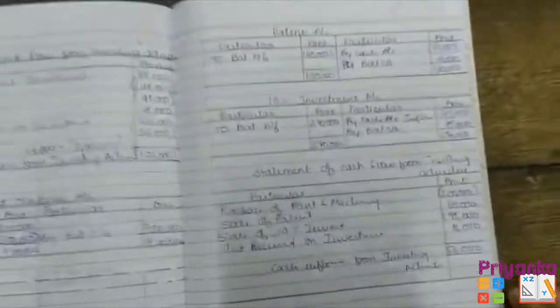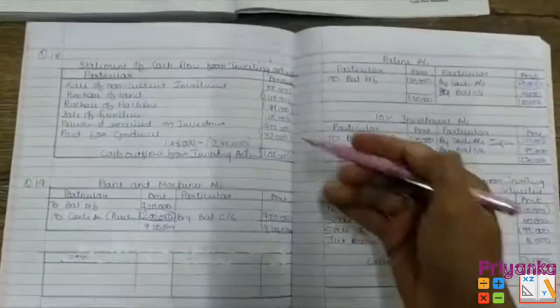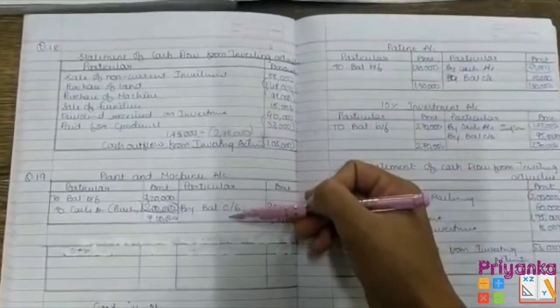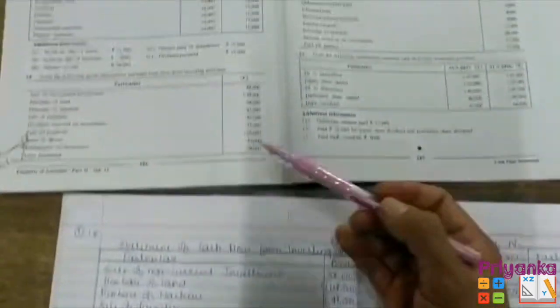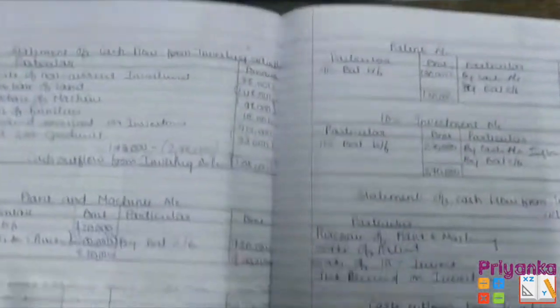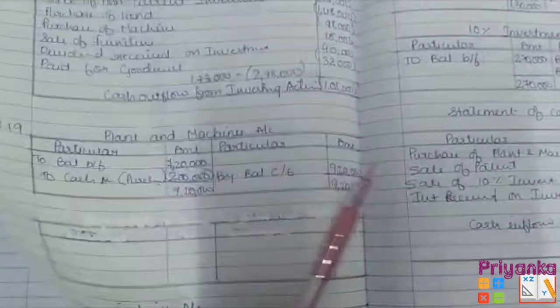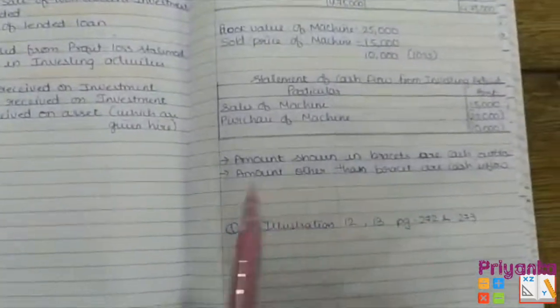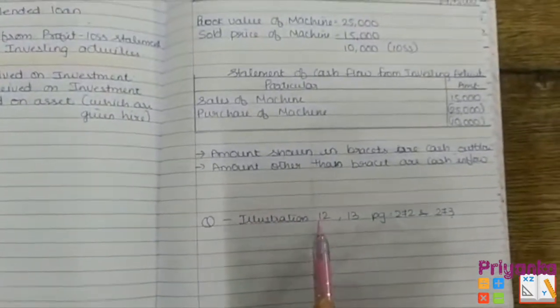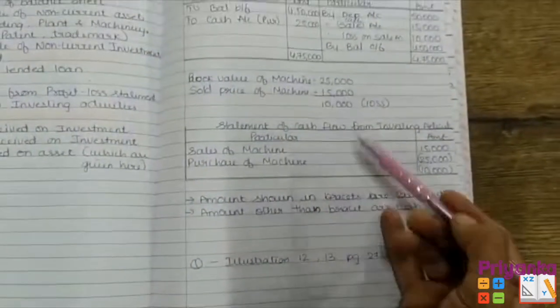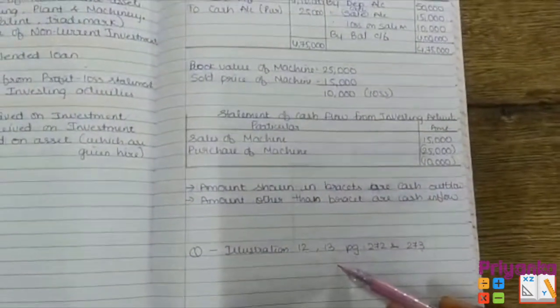This covers the investing activity. Only 2 questions are going to come in the exercise — question number 18 and 19. And from the illustrations, you have to solve 11, 12, and 13, because there are only 5 questions in total.